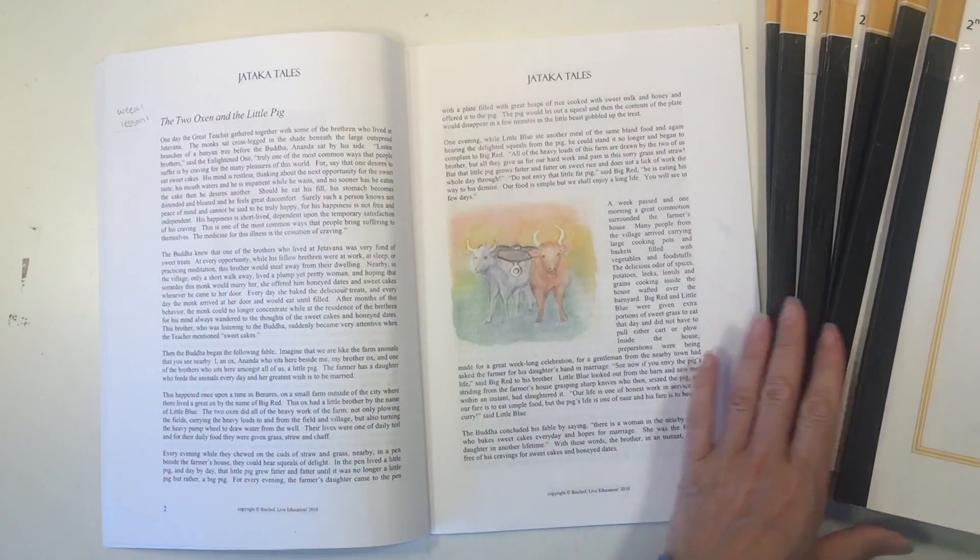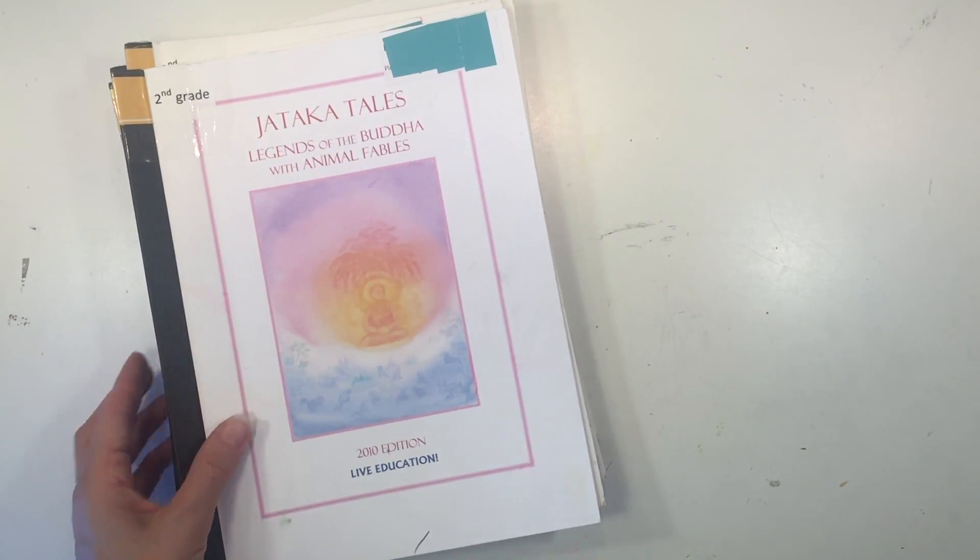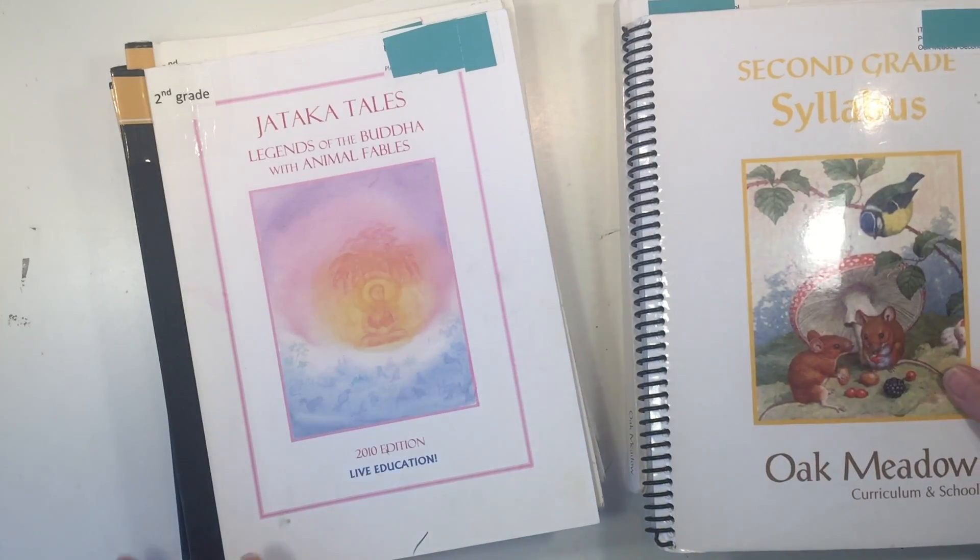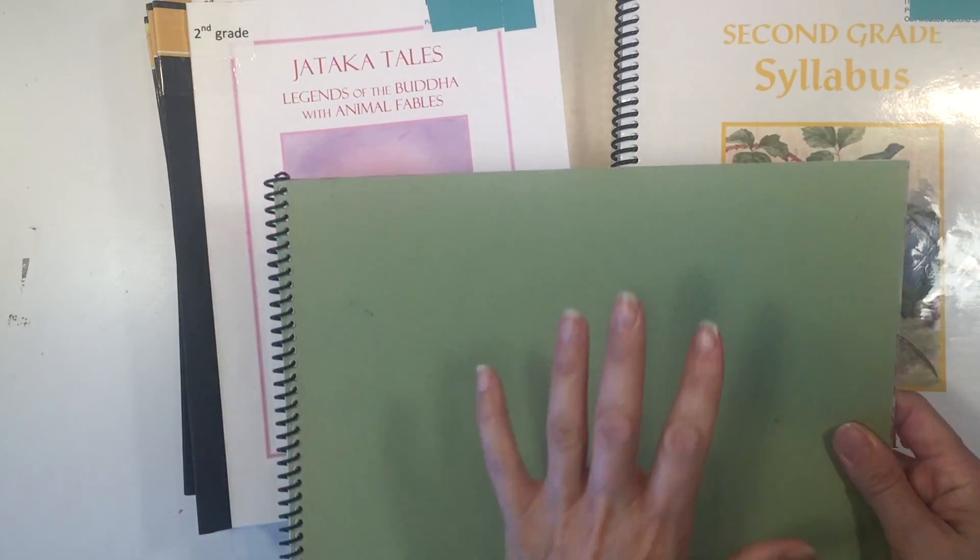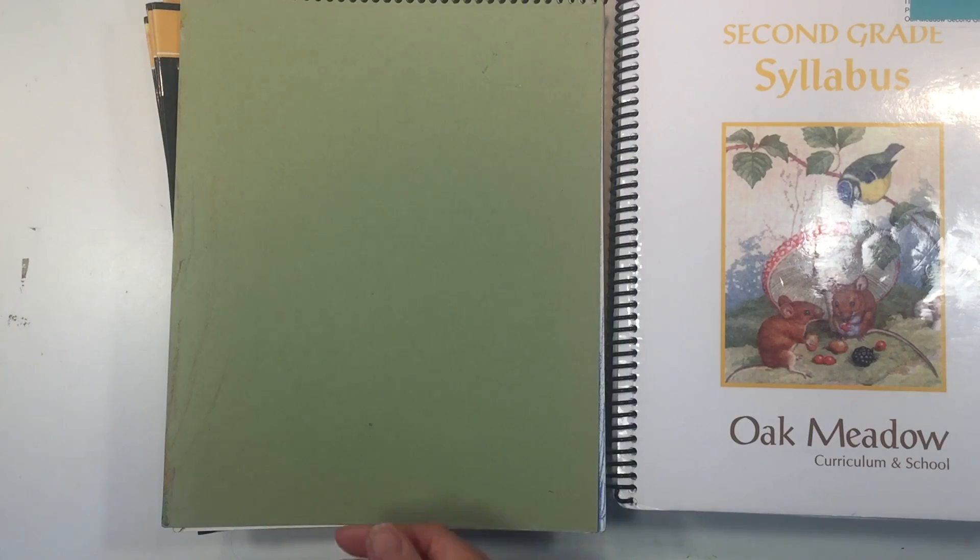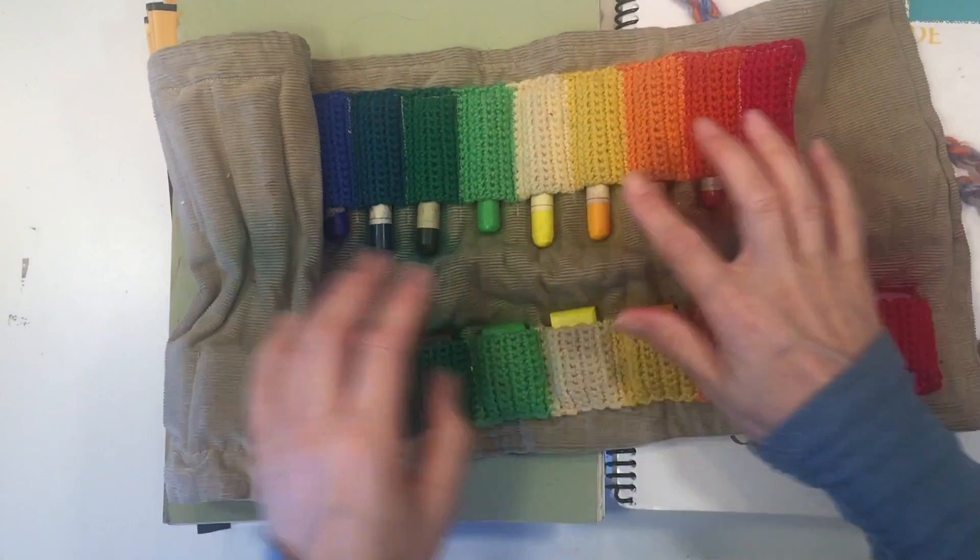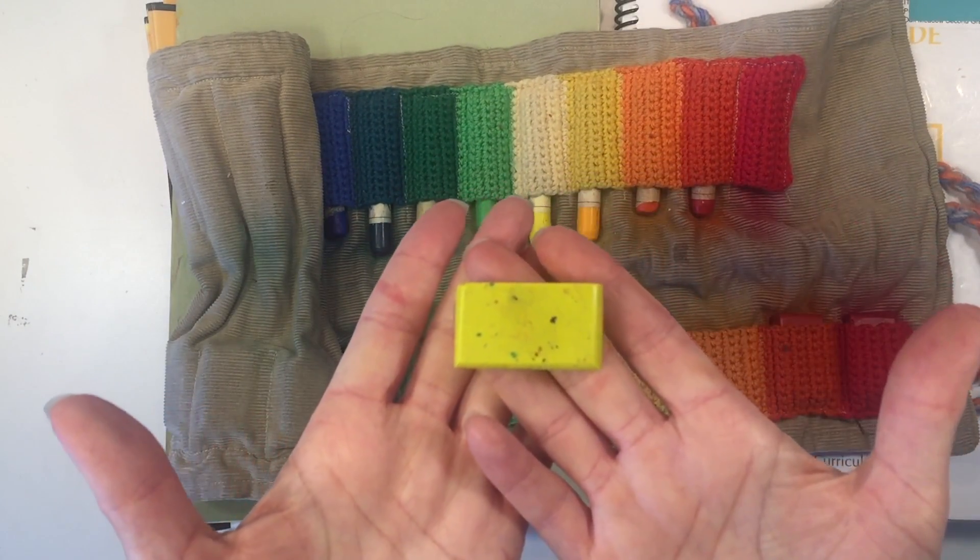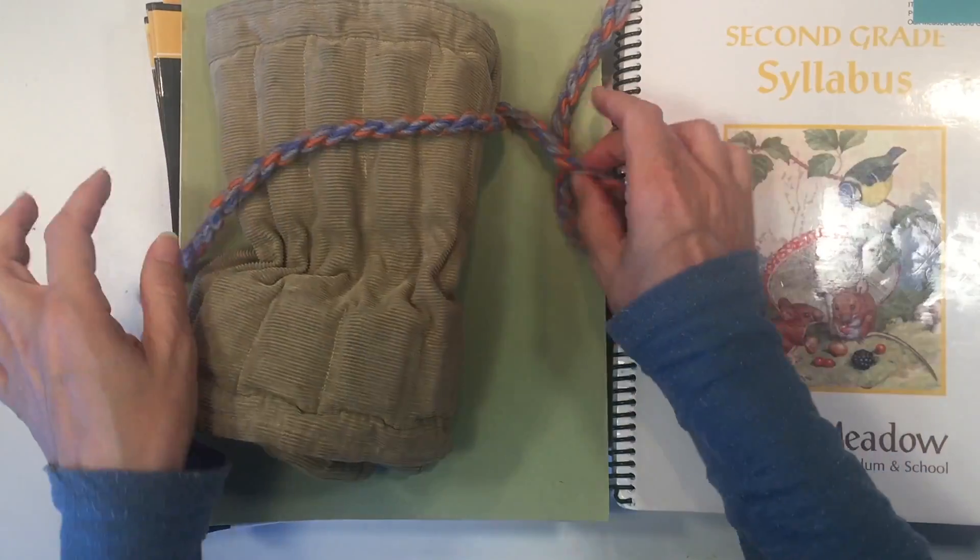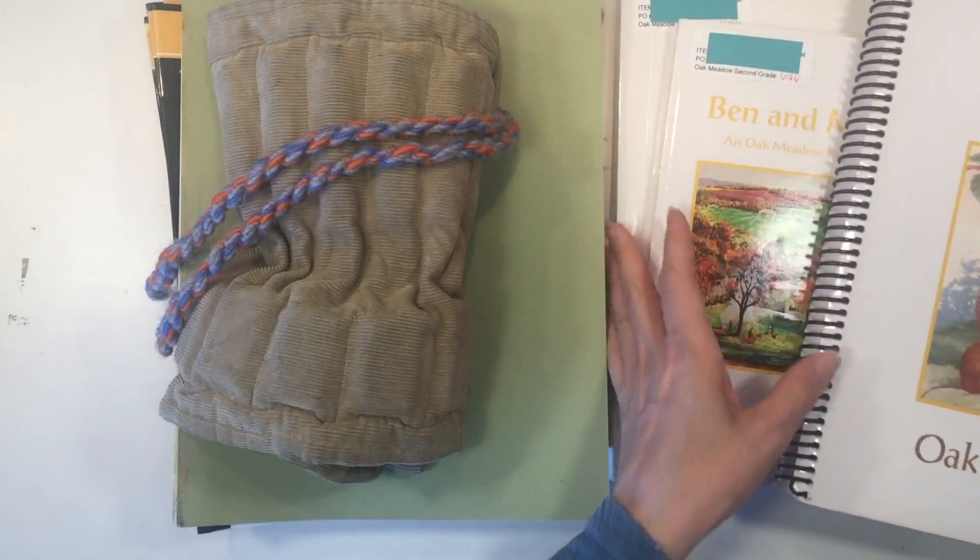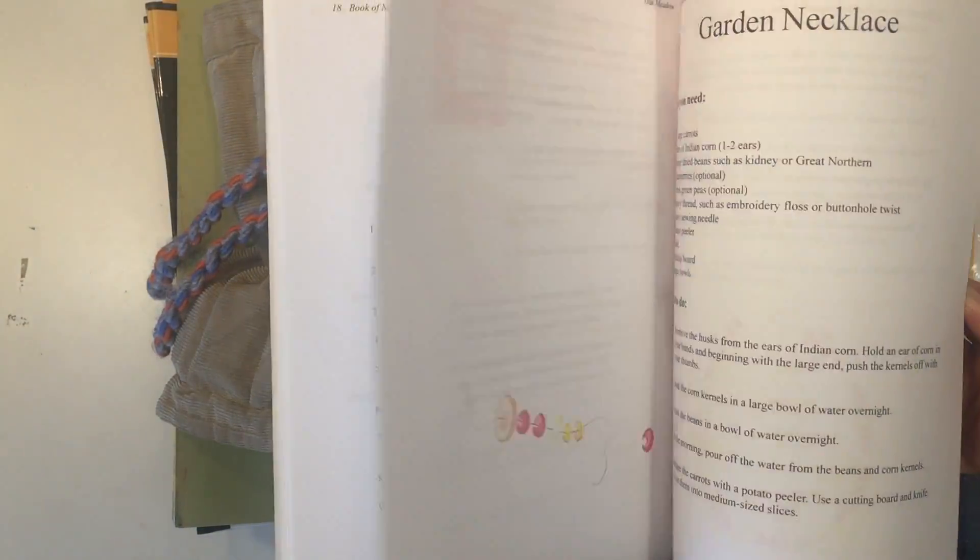With both of these curricula, you will need some additional resources. For the Live Education curriculum, you'll need some main lesson books as well as some crayons or color pencils because the students are still young. The stick and block crayons are ideal for the second grade student. And you can also use these with Oak Meadow. I like the way Oak Meadow has a separate craft book and this makes it really easy to add some extra crafts into your lessons.